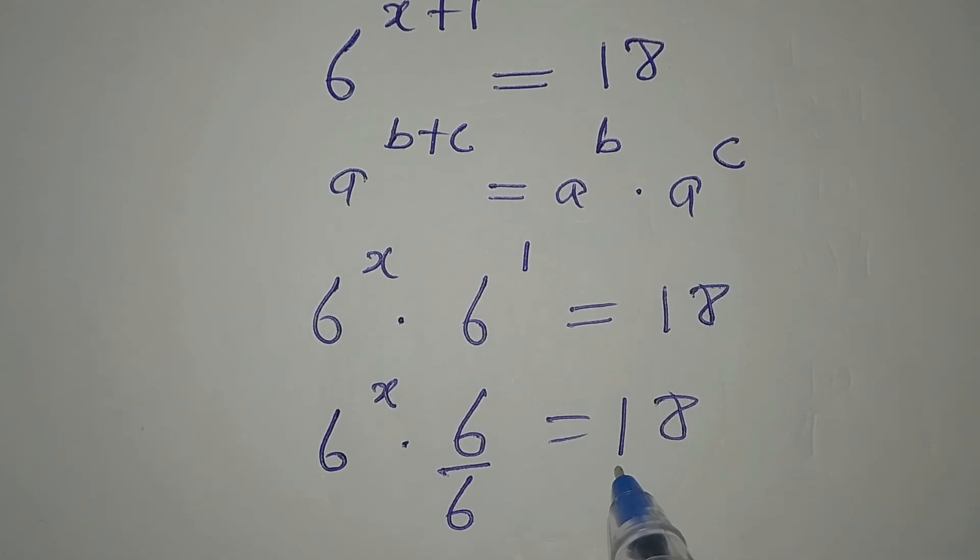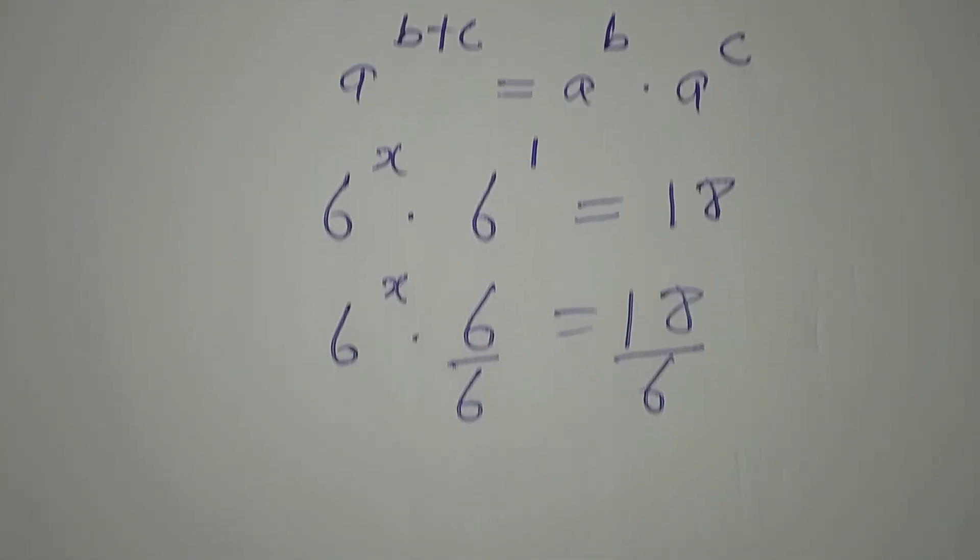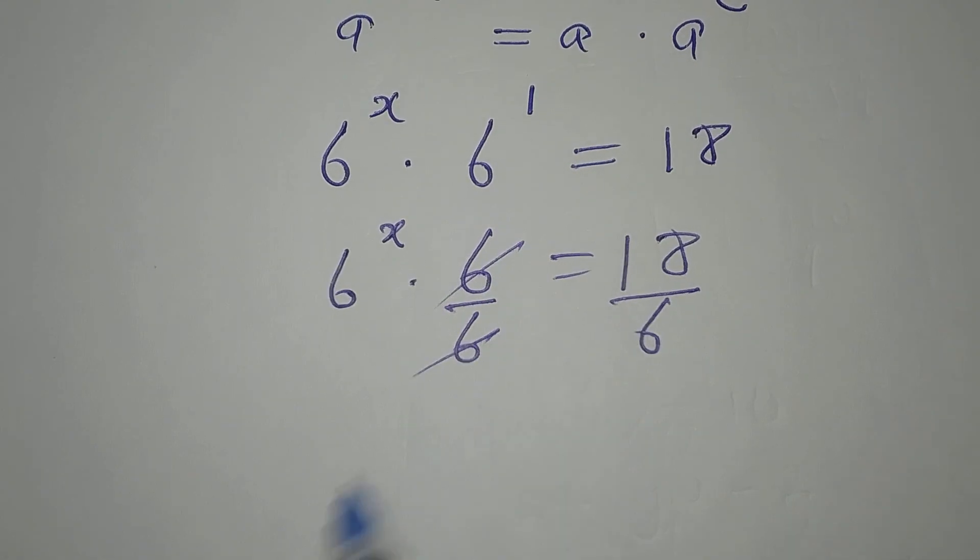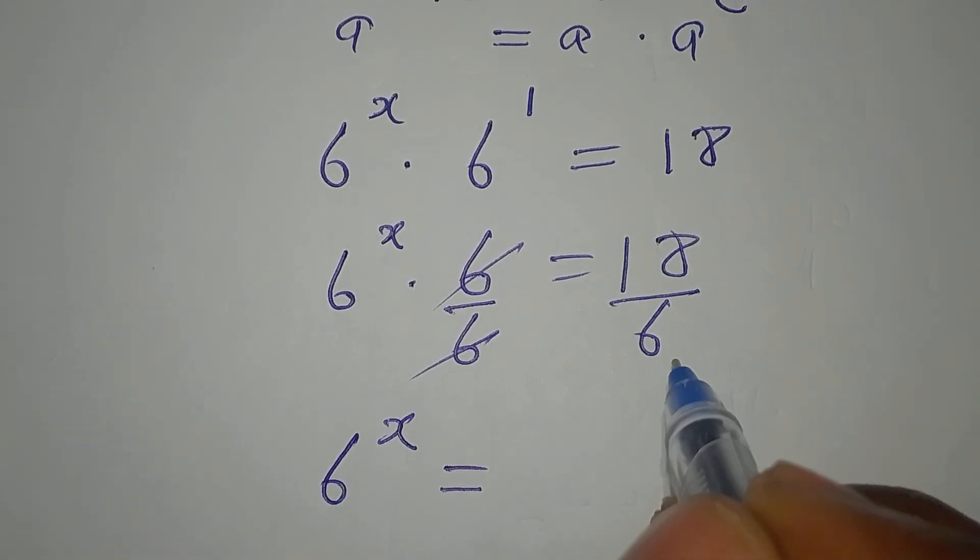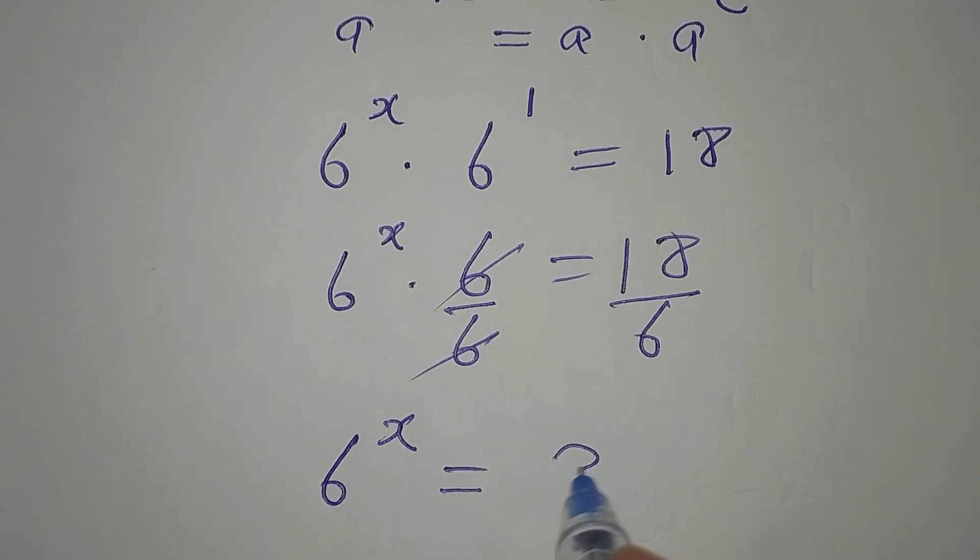Now we need to remove this 6 from here, so we divide by 6 and then we divide this by 6. Now this will go there, and then 6 to the power of x will be equal to 18 divided by 6, and that is 3.